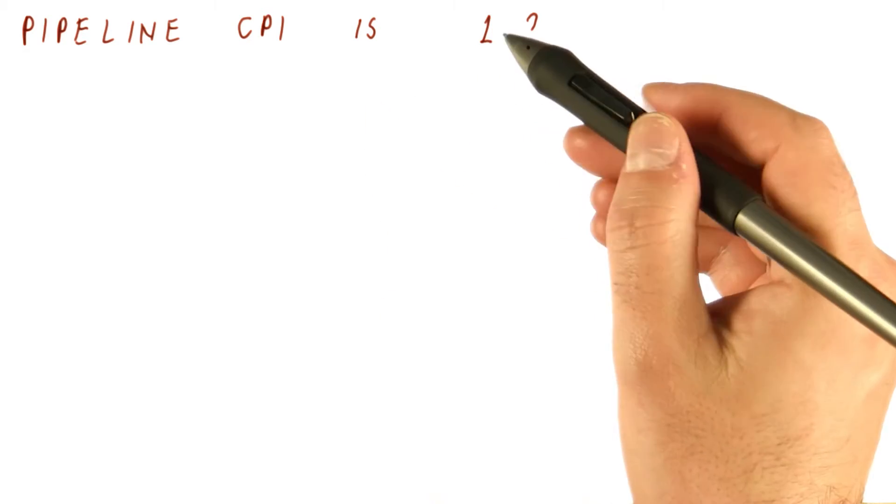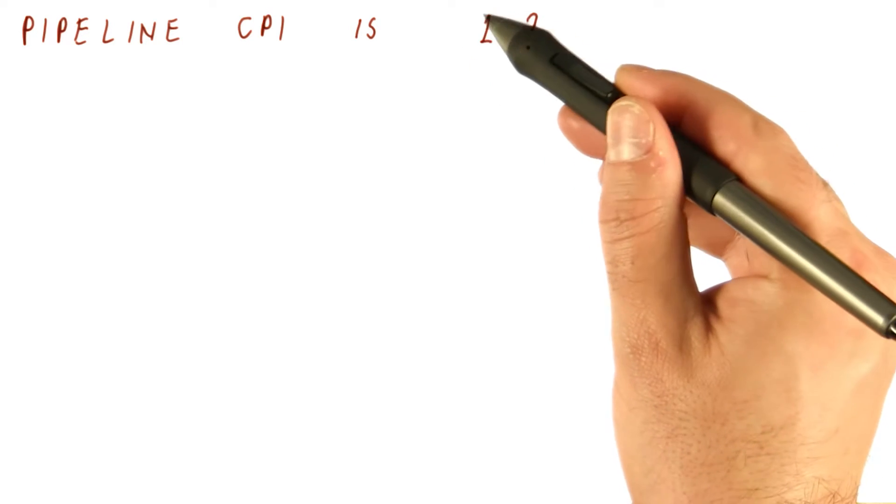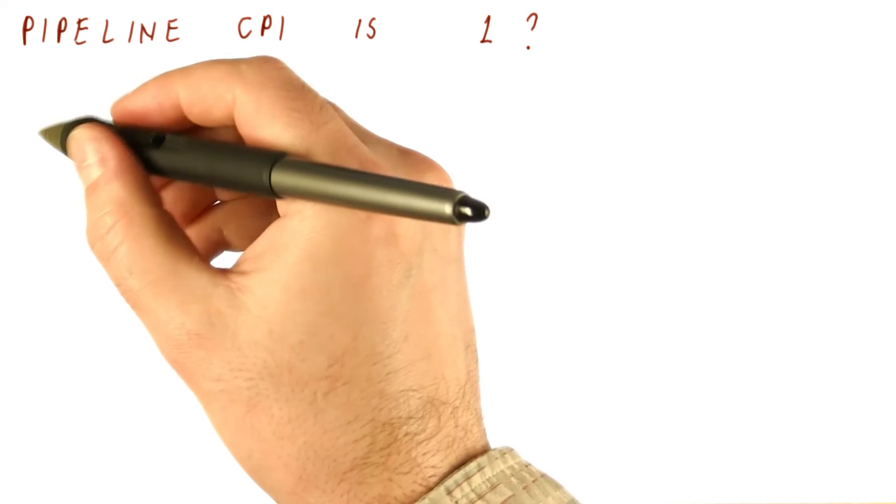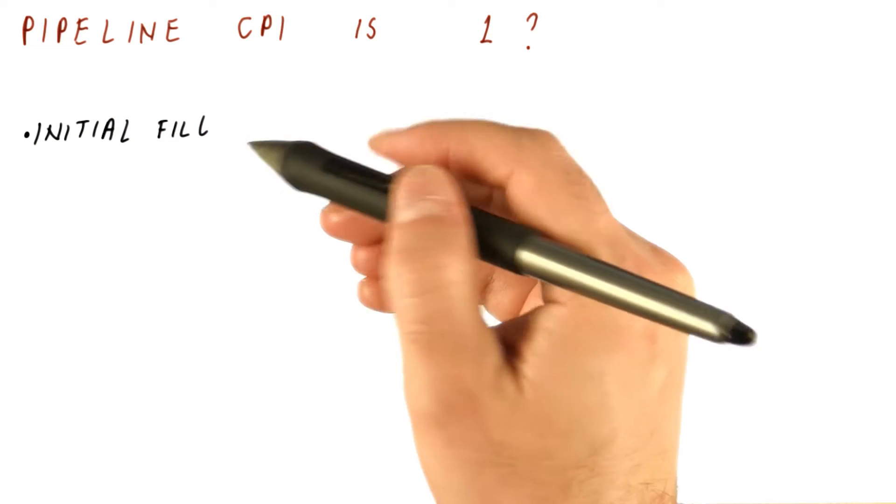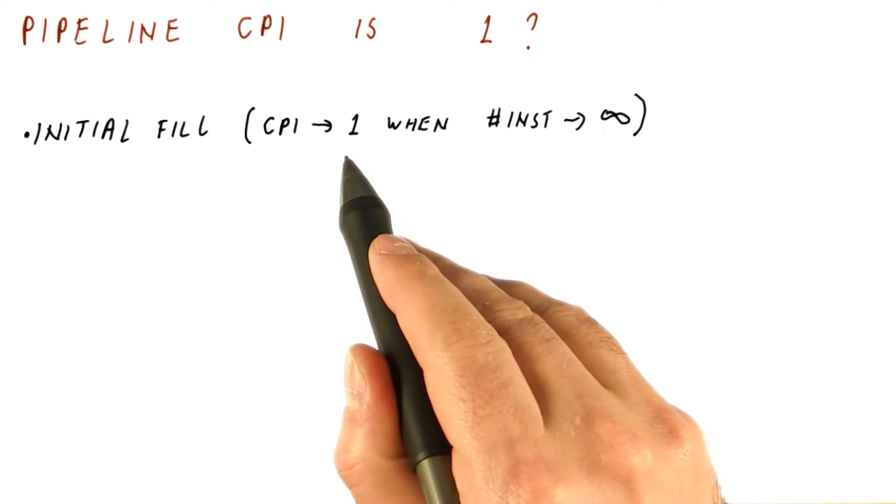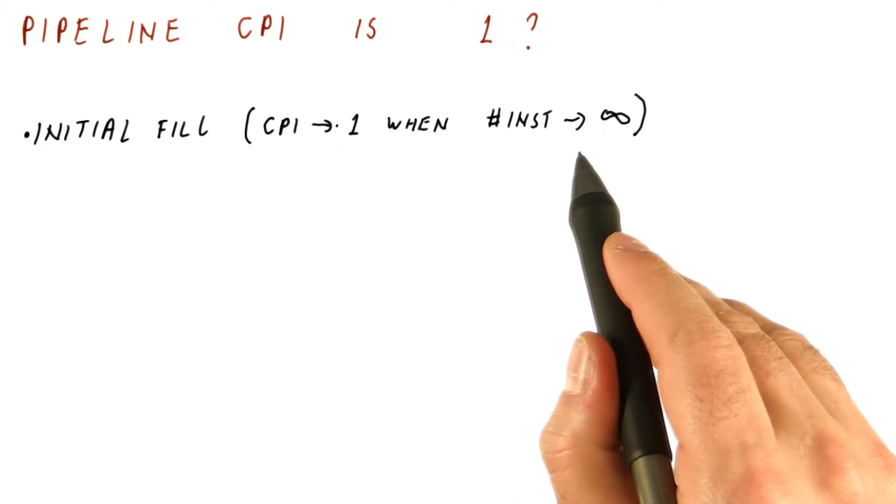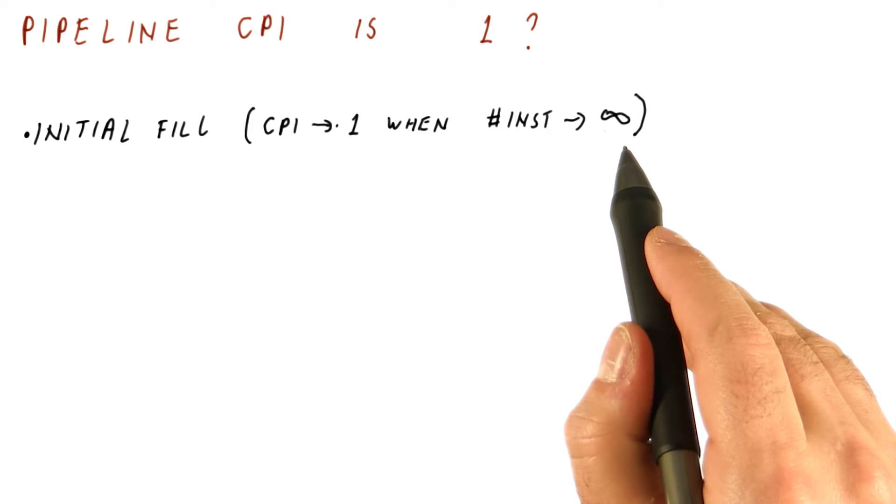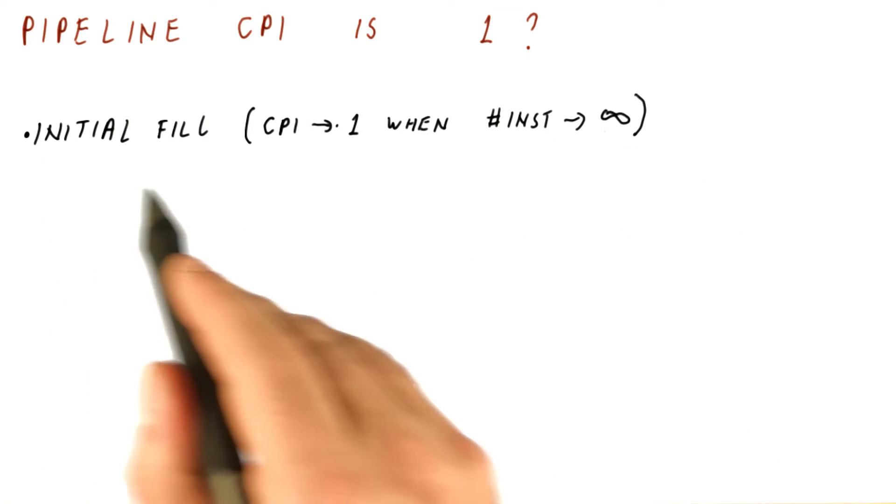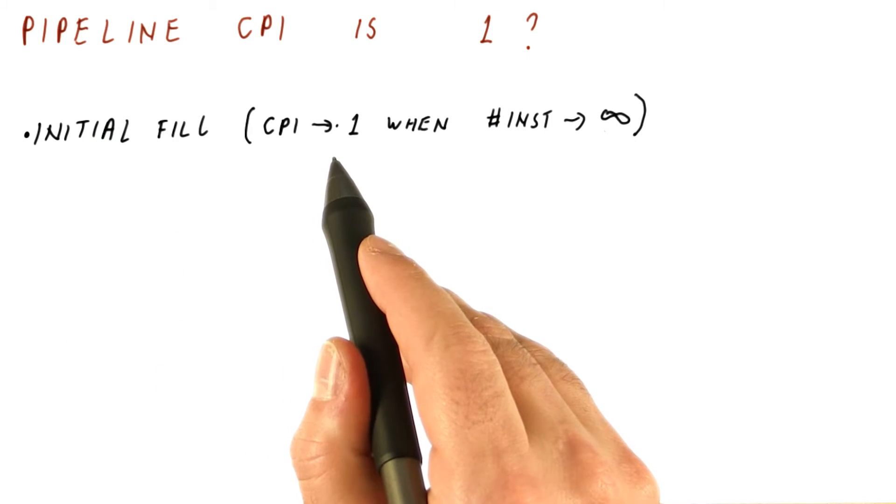Is that true, however? So the reasons why we don't always get the flow rate of one are the initial filling of the pipeline. But even with the initial fill, the CPI will get closer and closer to one as the number of instructions grows. And because we have many, many instructions, this is not really a big problem. Our CPI could be said to be one in spite of this.